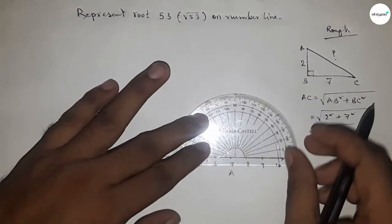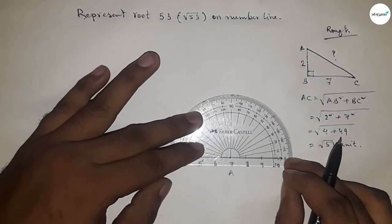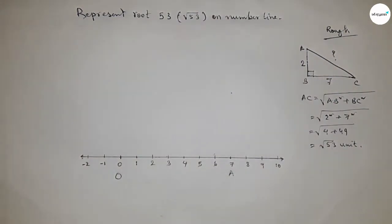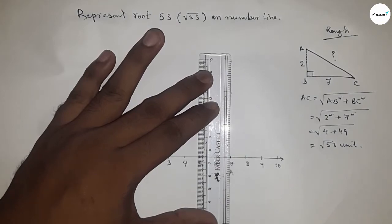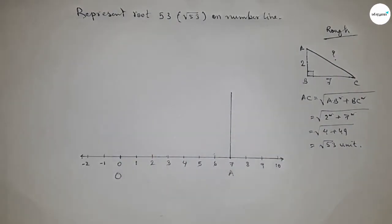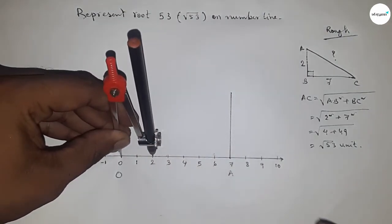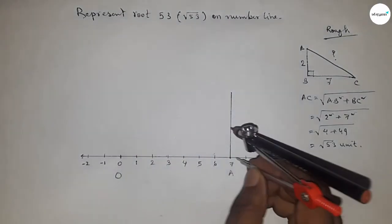So first drawing a 90 degree angle on the point A by using protractor. So first drawing a perpendicular line. Now taking the length two unit by compass and putting the compass here and cut here.